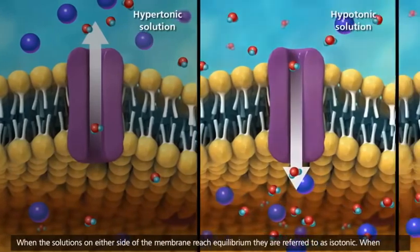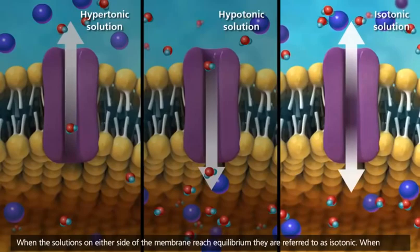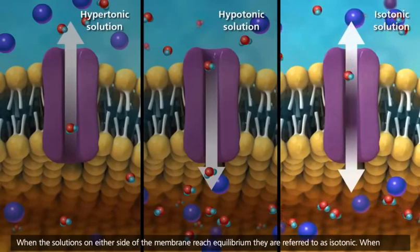When the solutions on either side of the membrane reach equilibrium, they are referred to as isotonic.